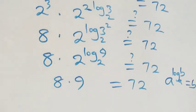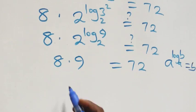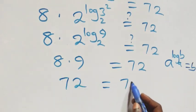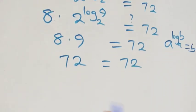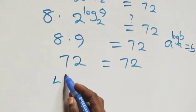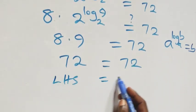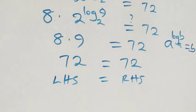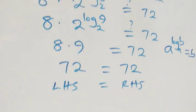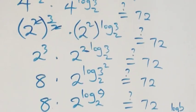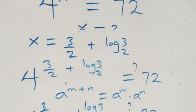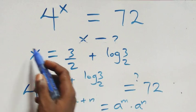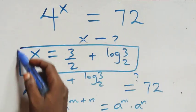Eight times nine gives us seventy-two, which is equal to seventy-two on the right-hand side. The left-hand side equals the right-hand side, and we conclude that x equals three over two plus log three to base two satisfies this given problem.